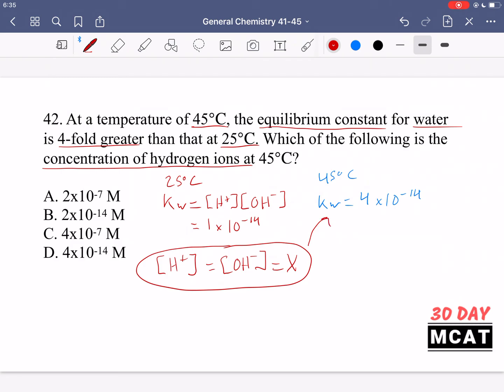We know that Kw is equal to H plus times OH minus which means that it's just x times x, right? So this number that we have is equal to x squared. That means when we solve for x we just take the square root of each side and we get that 2 times 10 to the negative 7 is equal to x. So A is our correct answer.